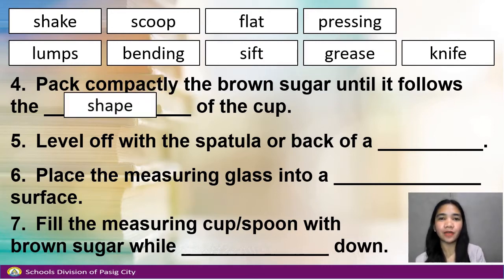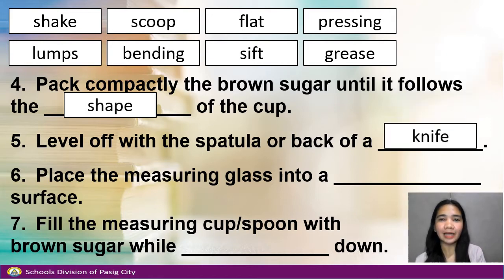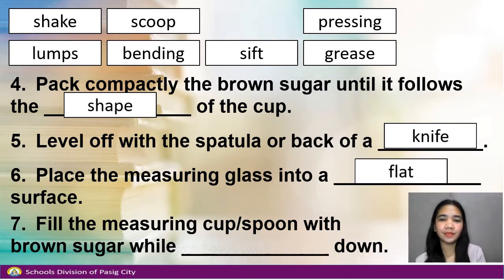Number 5. Level off with the spatula or back of a knife. Number 6. Place the measuring glass into a blank surface. Answer: Flat. Number 7.